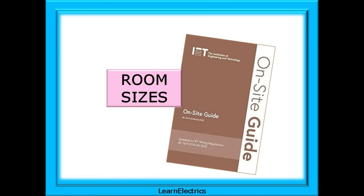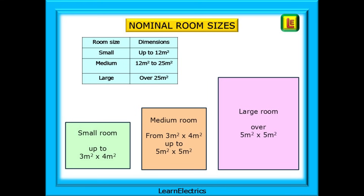Let's begin with the room sizes, as suggested in Table H7 of the On-Site Guide, or OSG, on page 214. We are using the Brown 18th Edition Amendment 2 On-Site Guide for this video. The On-Site Guide specifies three sizes of room: small rooms up to 12 square metres in area; medium rooms between 12 and 25 square metres; and large rooms greater than 25 square metres in floor area. Rooms can be any shape, of course.